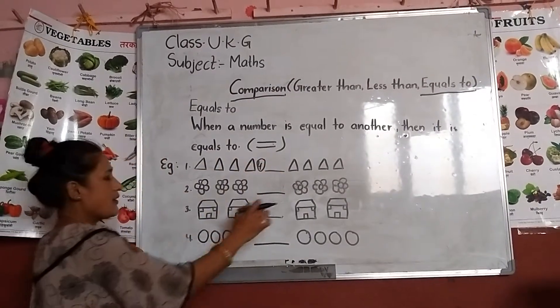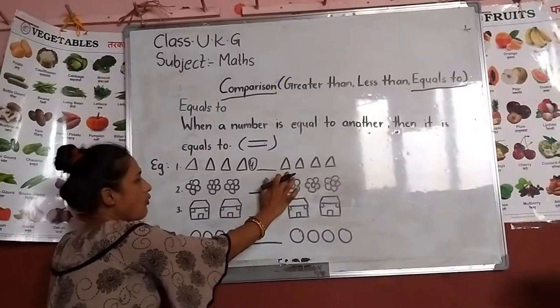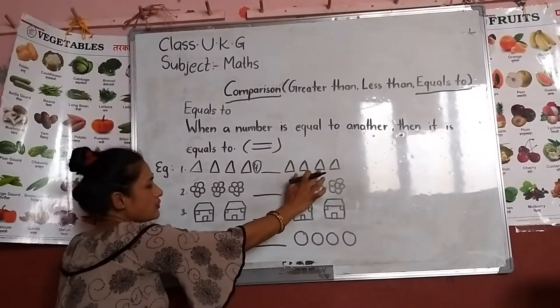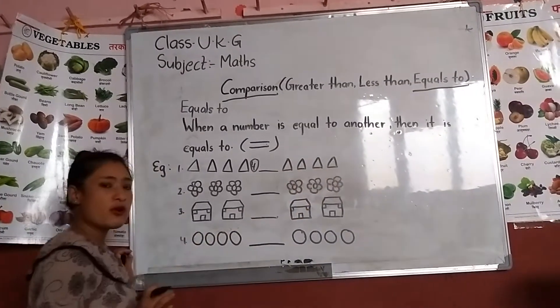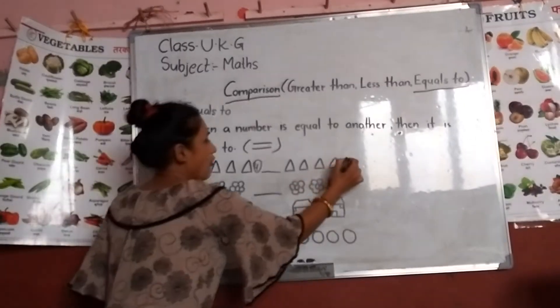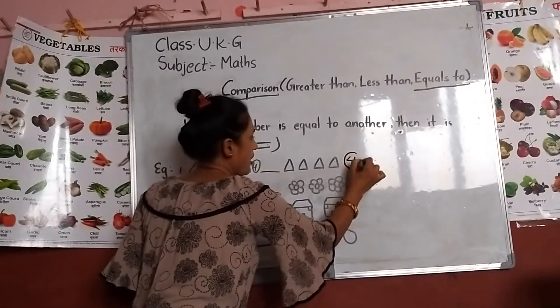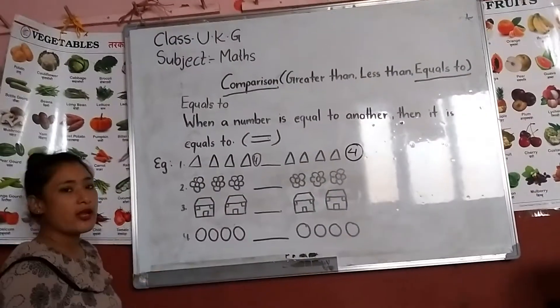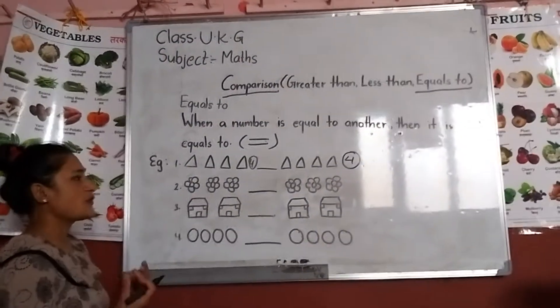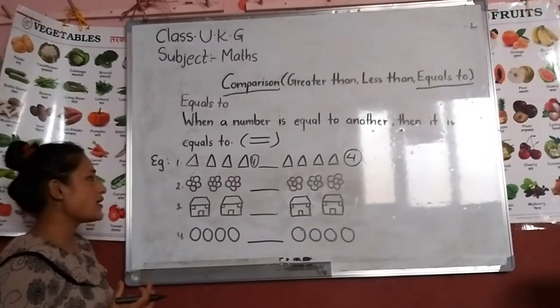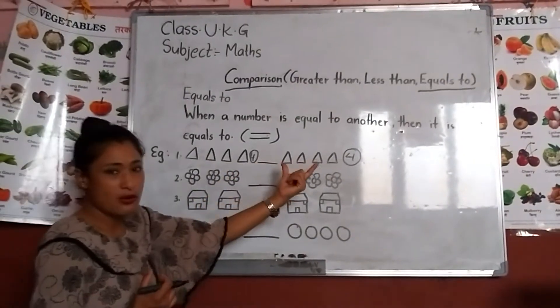One, two, three, four. Four triangles. This is the same way. Greater than, less than, equals to. This is the same way. Equals to.